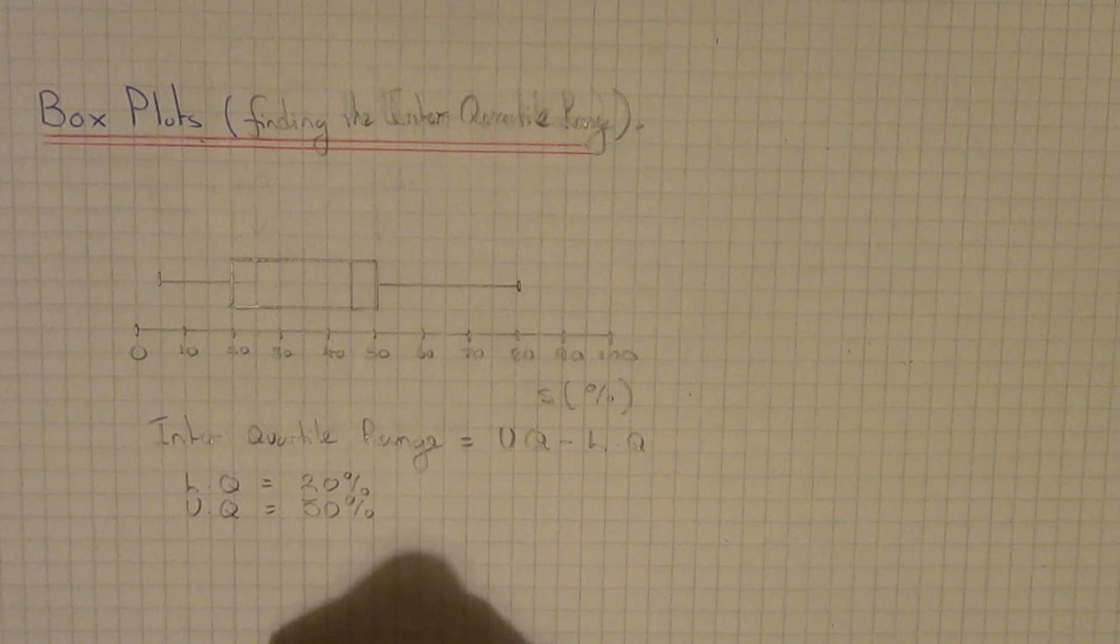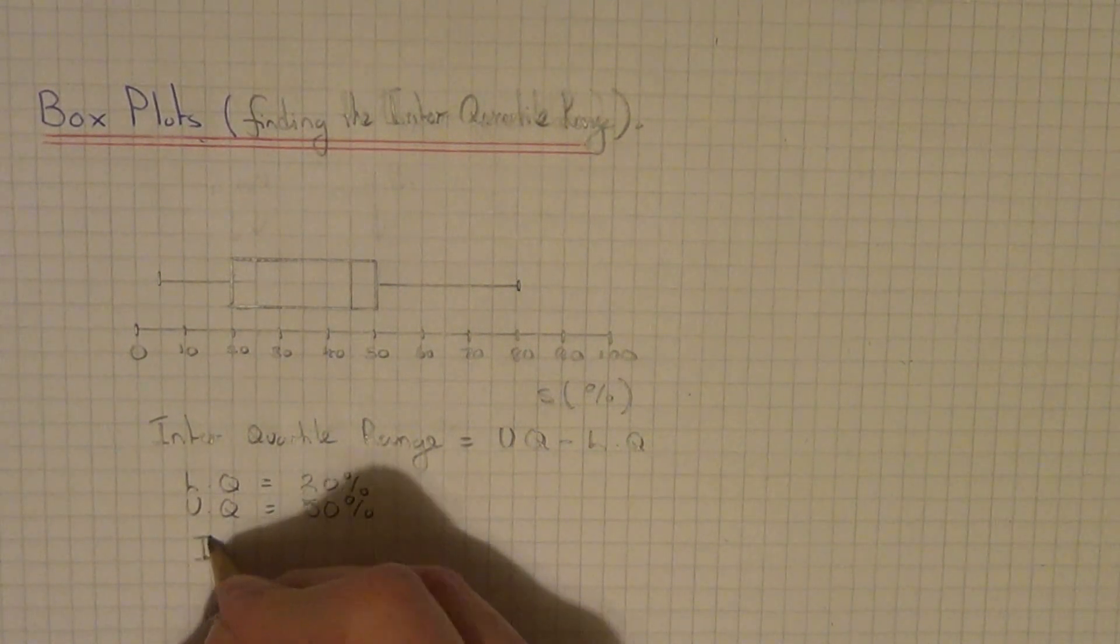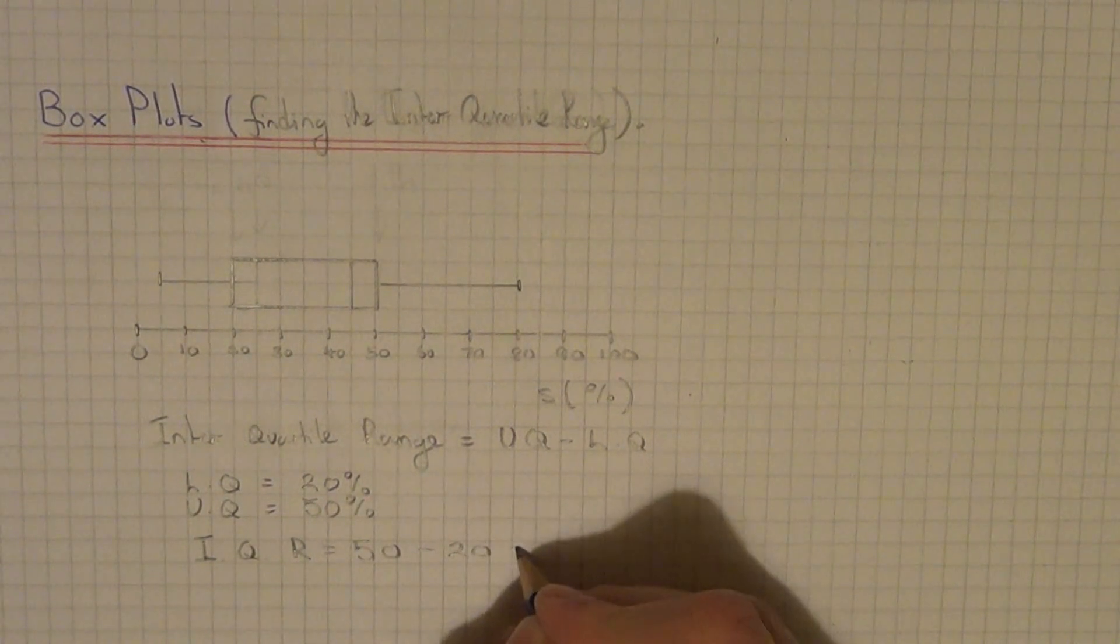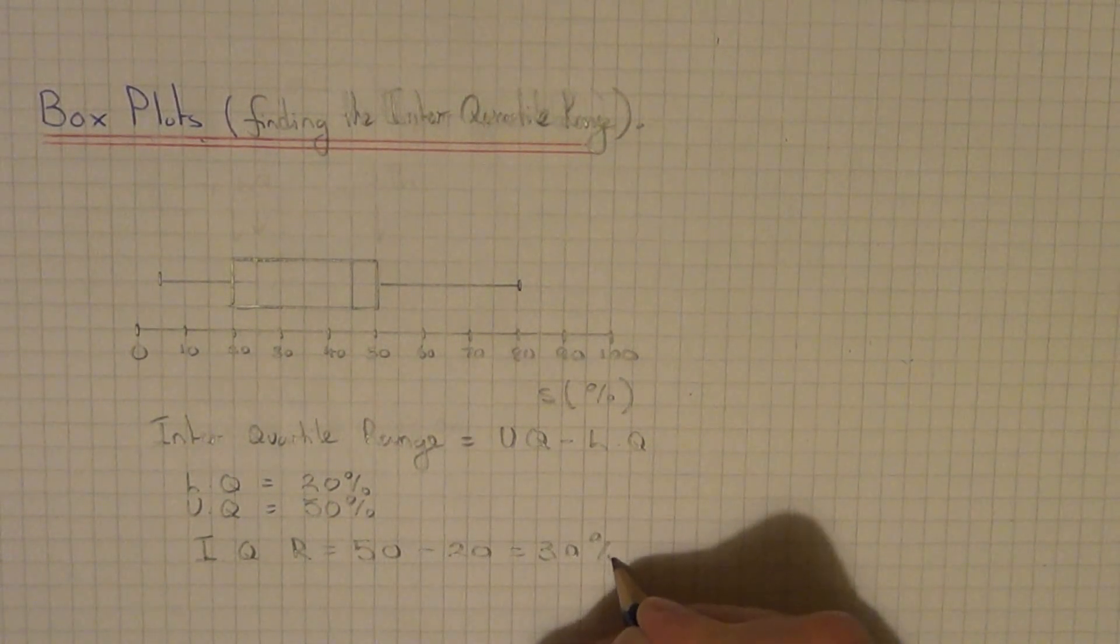We just need to work out the difference now to get our interquartile range. 50 minus 20 is 30%.